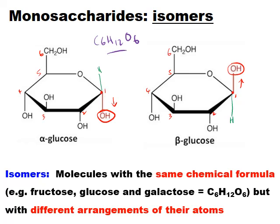A good way to remember this is the 70s pop band ABBA: A stands for alpha and B stands for below. So in alpha glucose the OH group is below carbon one. The next B stands for beta and A stands for above — so in beta glucose the OH group is above carbon one.